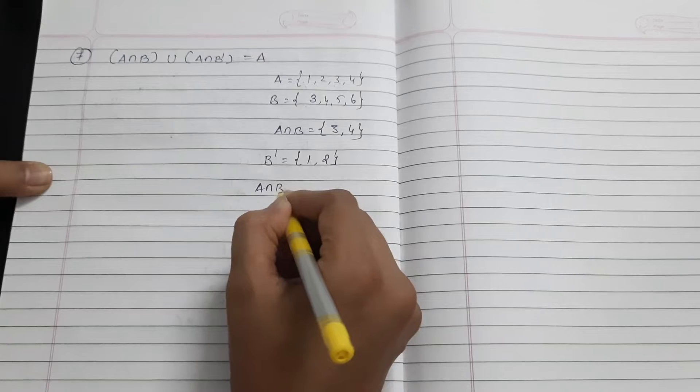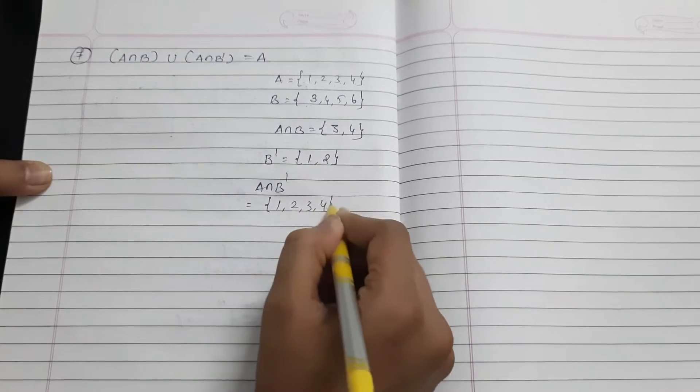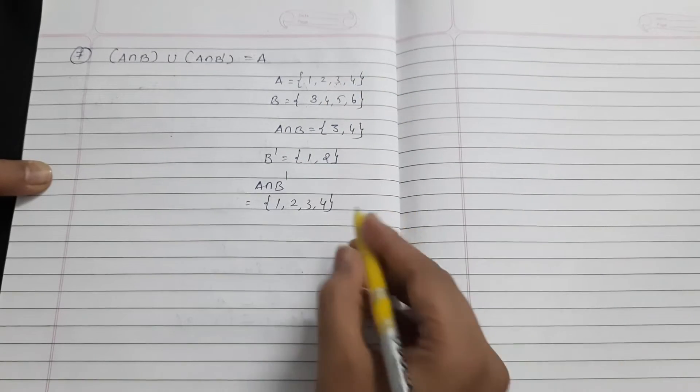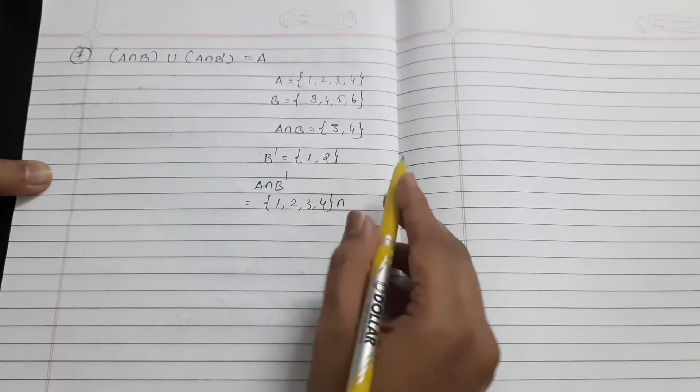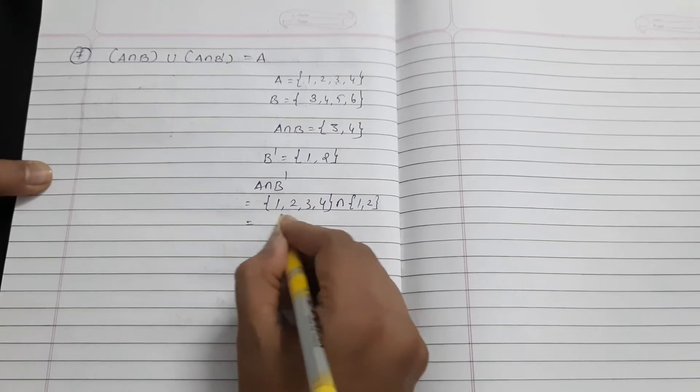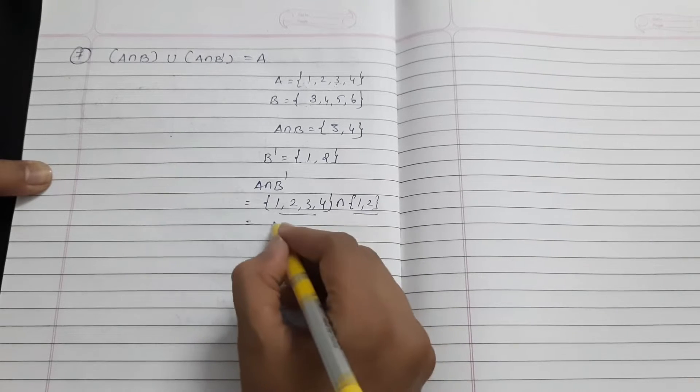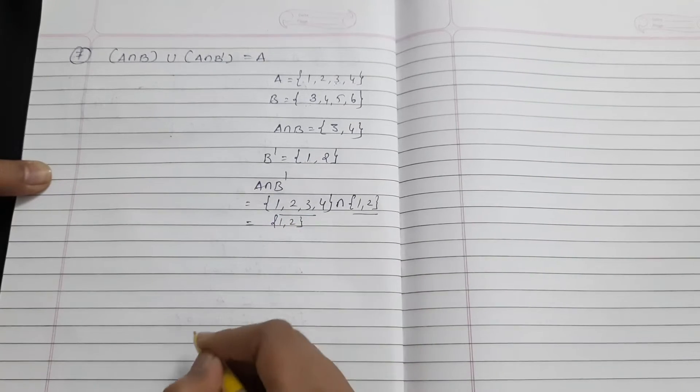Now A intersection B dash. I write this set {1, 2, 3, 4} and take intersection with B dash. B dash is {1, 2}. Now we find common elements between these two sets. That is 1, 2.